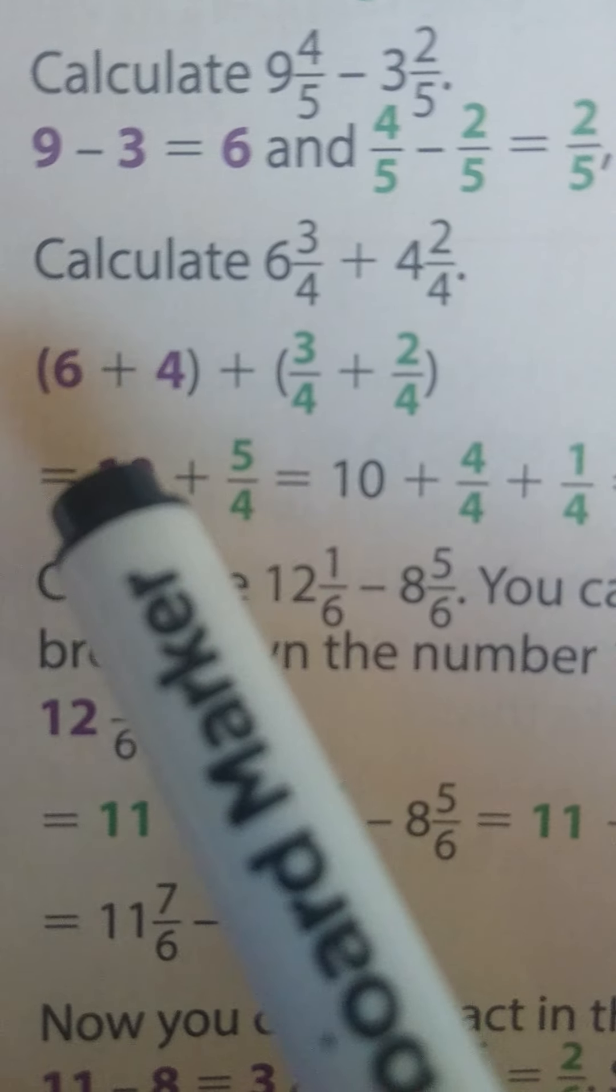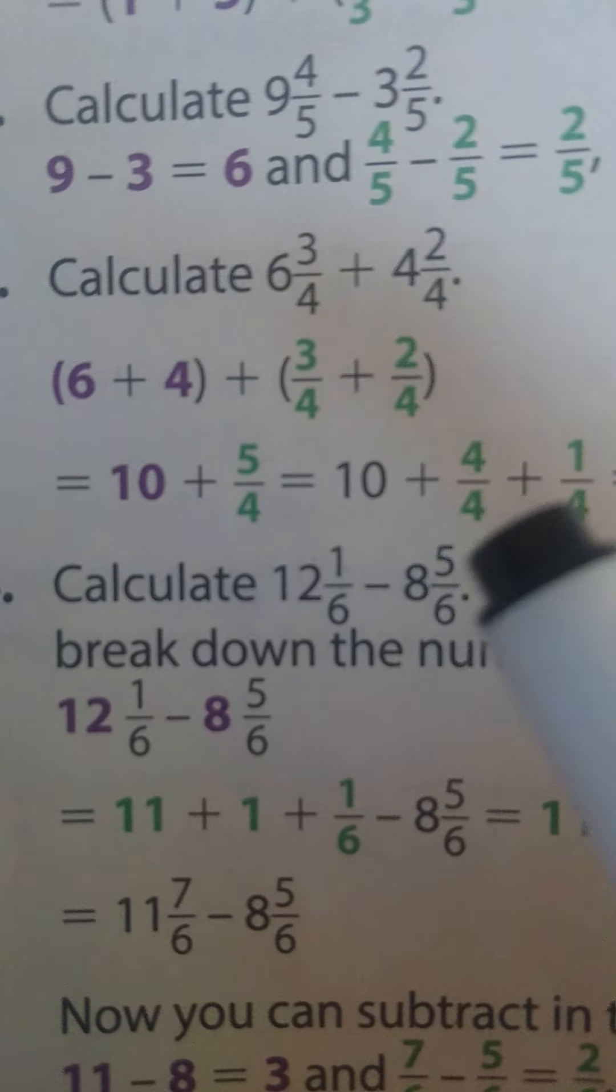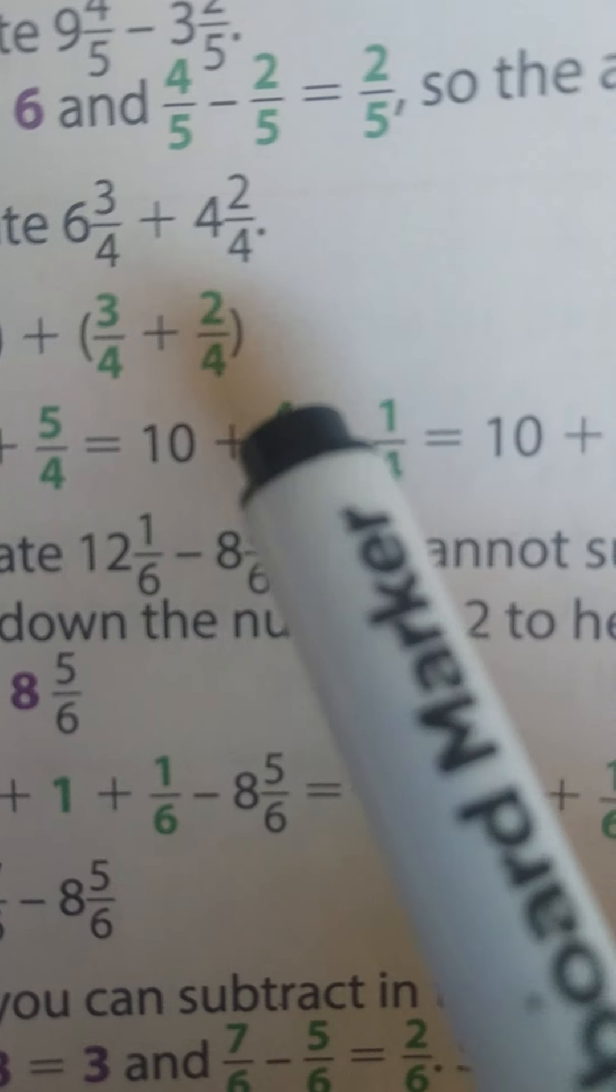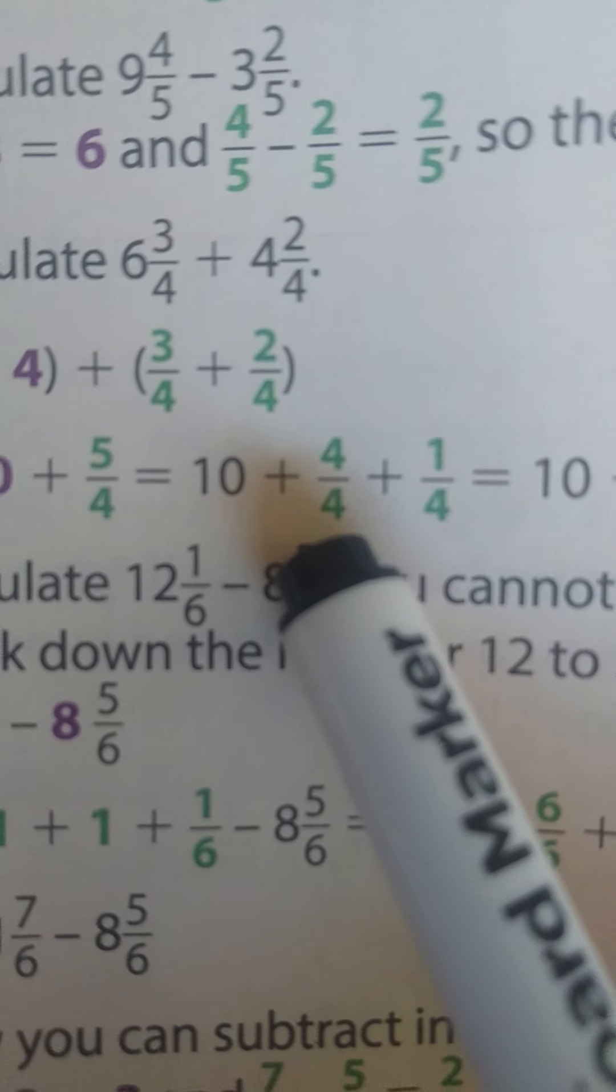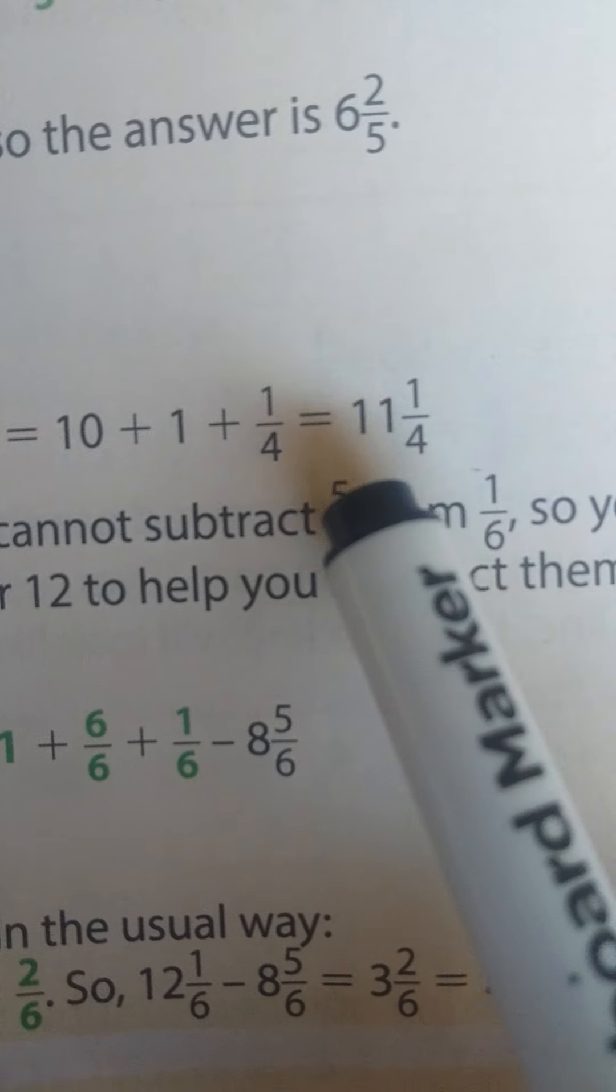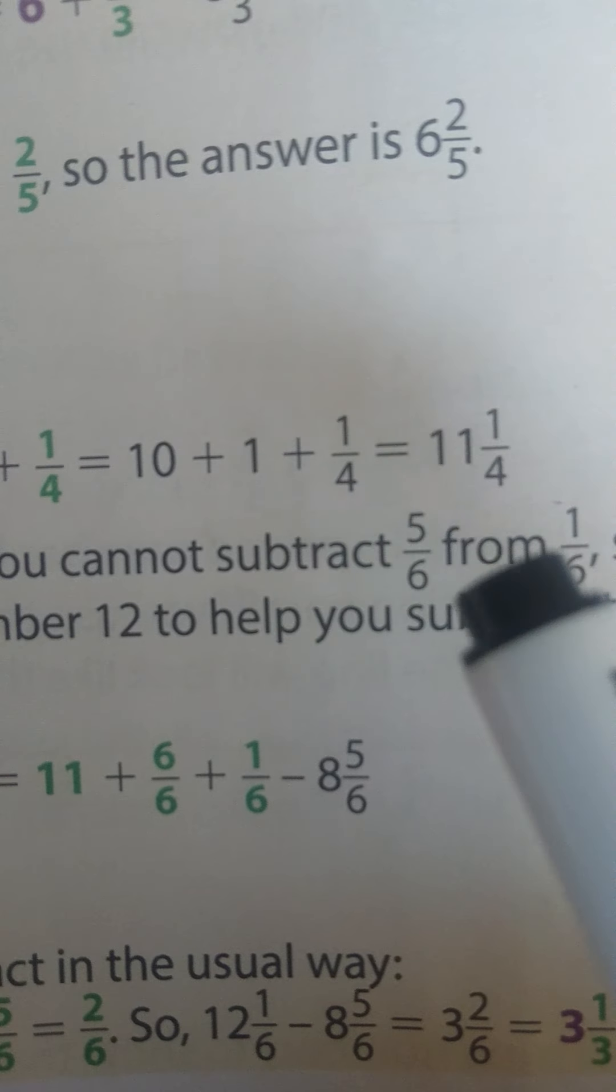We are going to take the whole number and add it to the other whole number. So here we have 10. Here's our whole number which makes 1 and our remainder which is ¼. So therefore our answer is going to be 11¼.